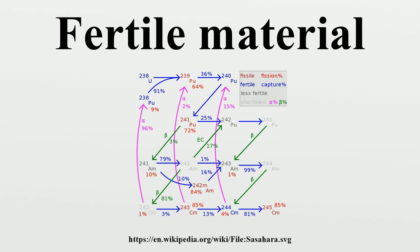Some other actinides need more than one neutron capture before arriving at an isotope which is both fissile and long-lived enough to probably capture another neutron in fission instead of decaying. Examples include: plutonium-242 to americium-243 to curium-244 to curium-245; uranium-236 to neptunium-237 to plutonium-238 to plutonium-239; and americium-241 to curium-242 to curium-243.